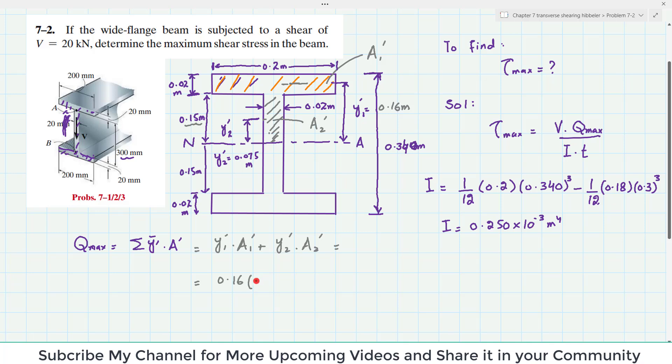Into area A1 is 0.2 into 0.02. Plus Y2 dash is 0.075.